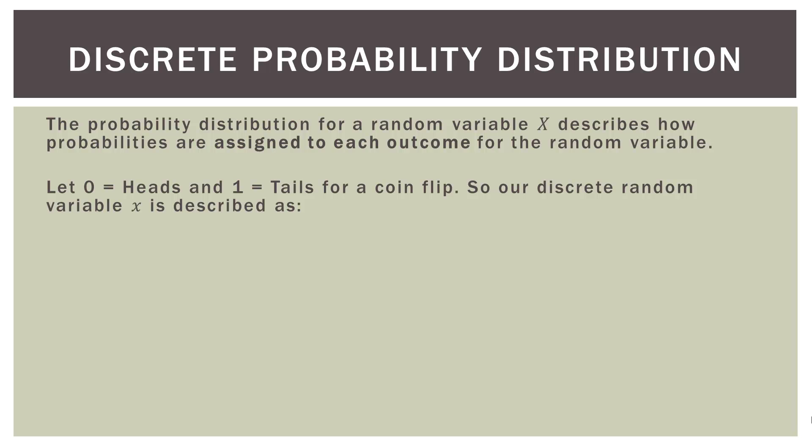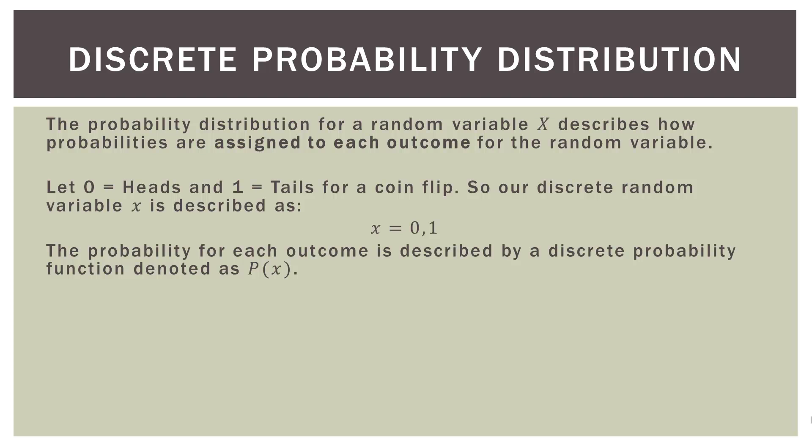In this example, let's let zero equal heads and one equal tails. Those are just arbitrary numbers — for this kind of experiment it doesn't matter. We're basically saying heads is a category and we're going to assign it a zero; tails is another category and we assign it a one. So our discrete random variable X is described as X could be zero or one — two finite outcomes representing heads or tails. The probability for each outcome is described by a discrete probability function denoted as P of X, which simply means the probability of X for each outcome.